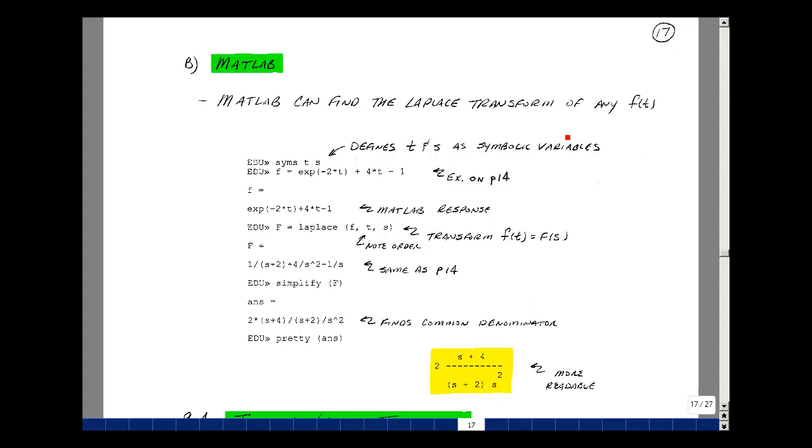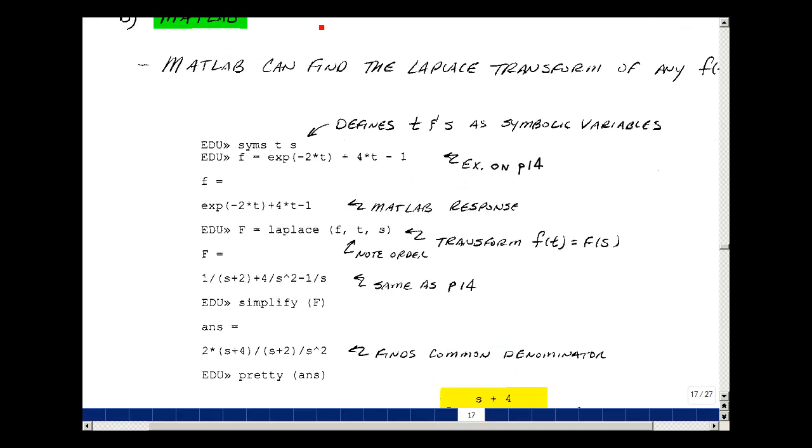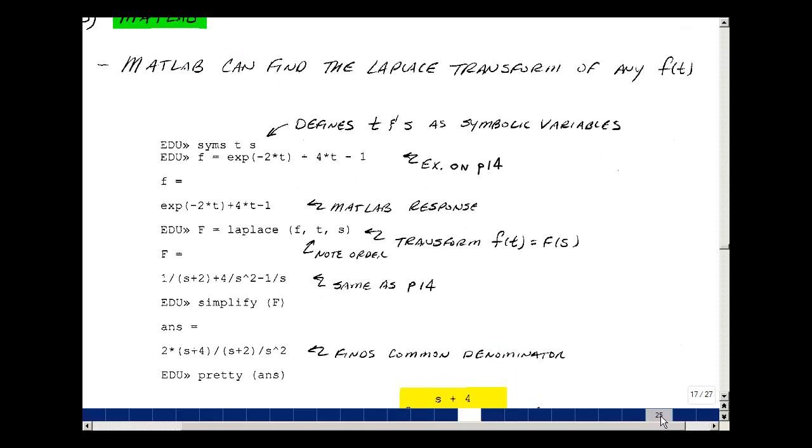MATLAB can find the Laplace transform of any function f(t). We'll start by declaring our symbolic variables, in this case t and s, and let's take the example we did on page 14, which was e^(-2t)u(t) + 4tu(t) - u(t). We'll call that f. When you hit return, it echoes back the same expression. Let's use the Laplace command in MATLAB. We'll say F equals laplace of f, t, and s. So here's our function little f. Our variables here are t and s, and the order is very important. We're taking the Laplace transform of f(t) giving us F(s).